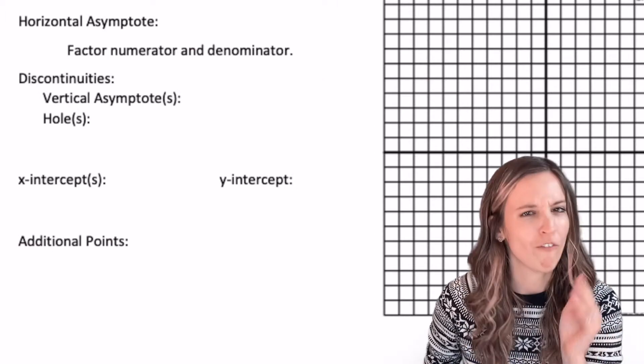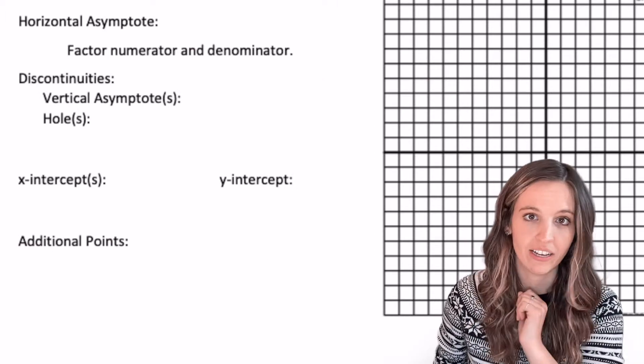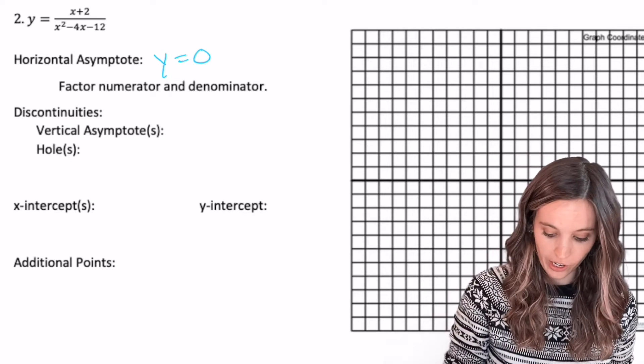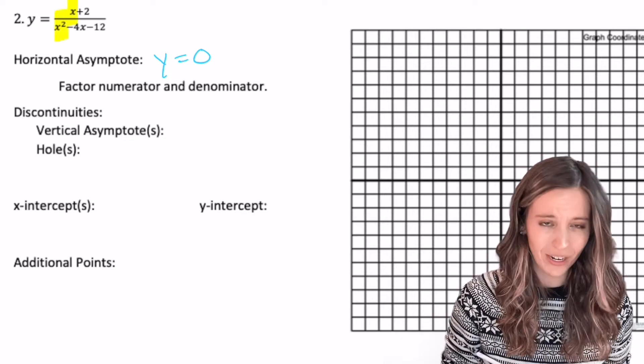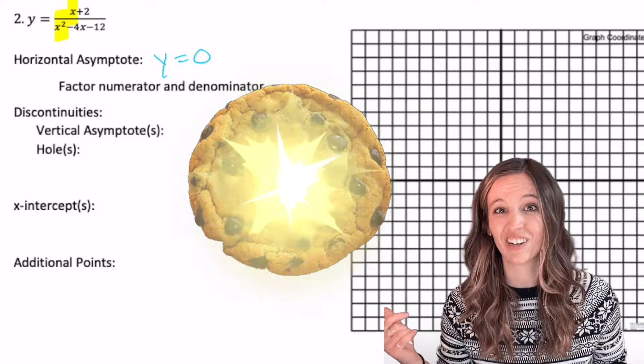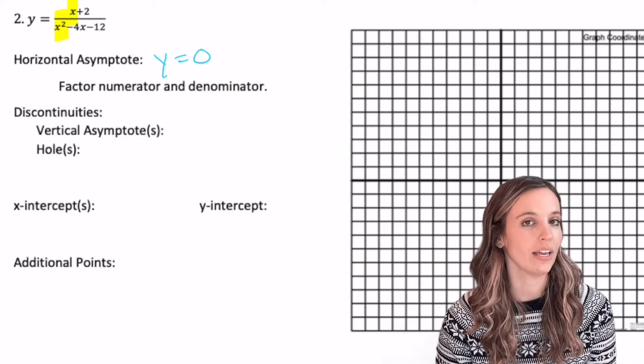What's the first thing we're going to do? Go find that horizontal asymptote. Go find it. Y equals zero. Why? Which one's stronger? Numerator, x to the one. Denominator, x squared. Denominator. No cookie for you. So y equals zero.